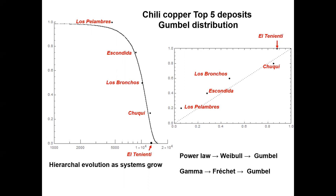This divergence is to be expected. There is a well-established theorem since 1930 that there is a hierarchy of these stable distributions, such that a power law evolves into a Weibull, which evolves into a Gumbel as the size of the distribution increases, and a gamma evolves to a Fréchet, which also evolves essentially to a Gumbel. You can see that the five top Chile deposits — El Teniente, Chuquicamata, Los Bronces, Escondida, and Los Pelambres — follow a very nice Gumbel distribution.